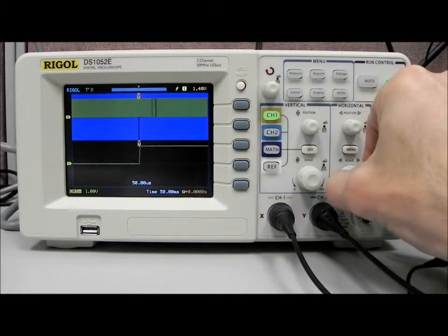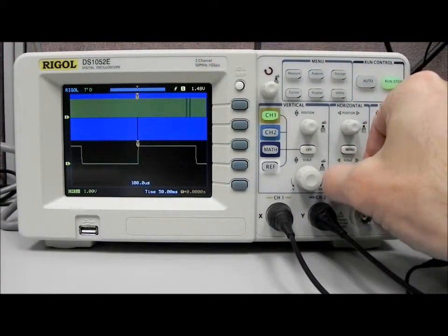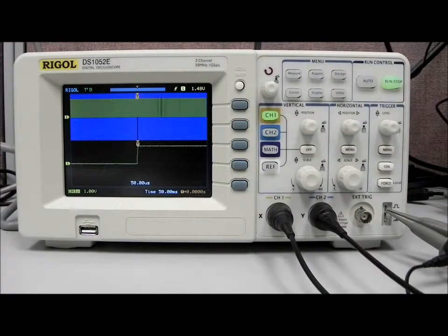And again, we can change that resolution of the zoom window, and so you can see that very small slice. It can be very useful for troubleshooting longer signals, and we want to zoom in on a particular area that may be problematic.